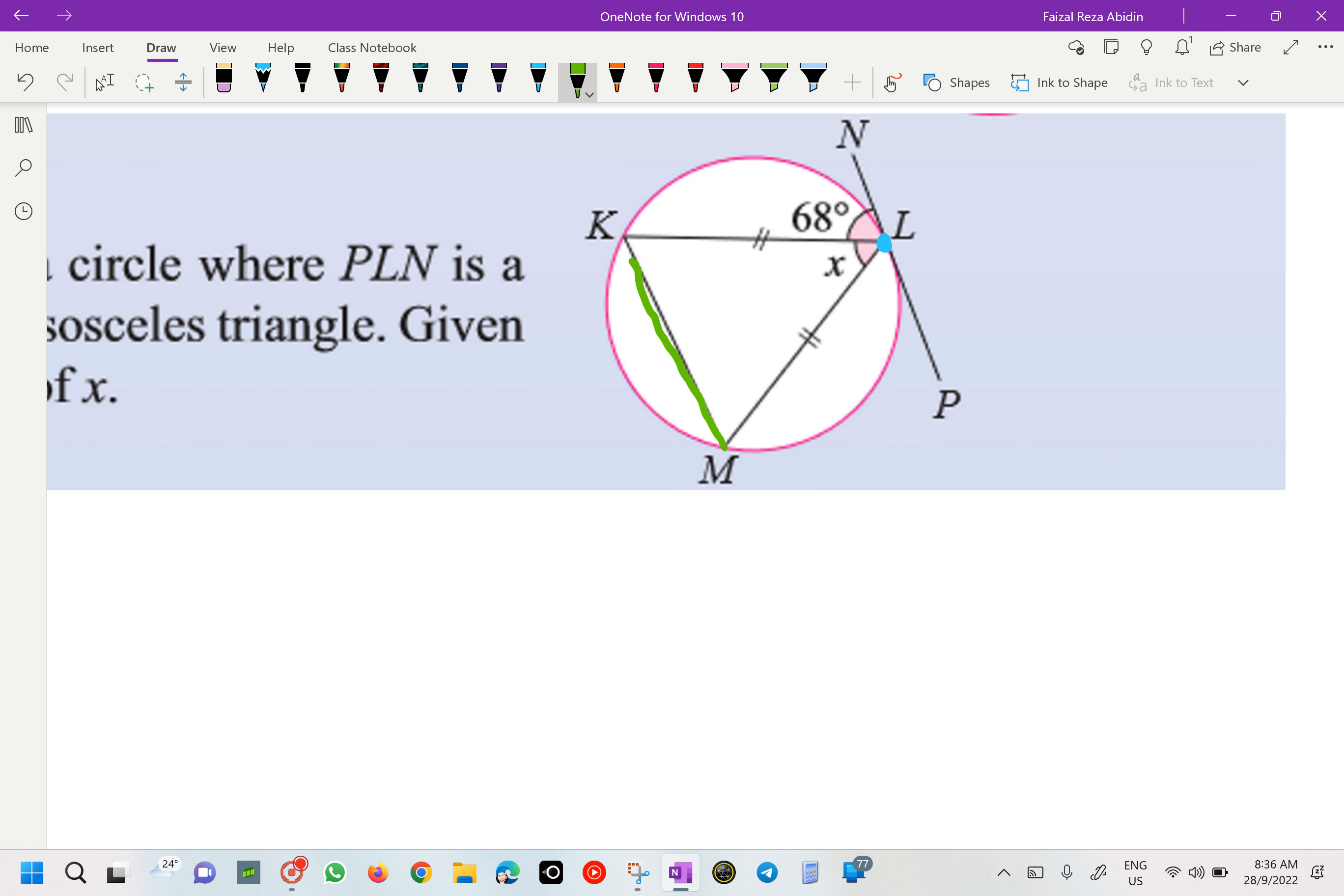Can I find our x now? Yes, same like just now. This is going to be our isosceles, means that the angle at K over here is going to be also 68. Can I find my x? Yes. So our x over here is 180 minus 68 minus 68. What you are going to get? 44 degrees.